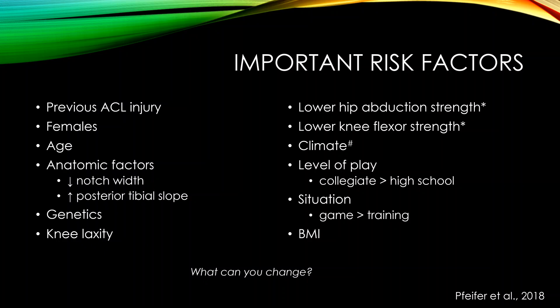Knee laxity is potentially changeable - we don't necessarily know exactly how, but to some extent it's probably modifiable, and it's also related to genetics. Strength of certain muscles is obviously very modifiable. Climate is not something we can change, but from a policy standpoint we could potentially create policies that prevent playing under certain high-risk conditions. Level of play is something most people wouldn't want to change. Game versus training situation - on a policy level maybe there could be a limit to how many games you can play in a certain time period. Body mass index is obviously something you can change to some extent.